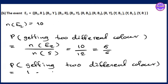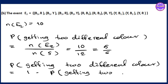The probability of getting the same color: getting the same color. If you have the same color, we can use the complement rule — 1 minus the probability of different colors.